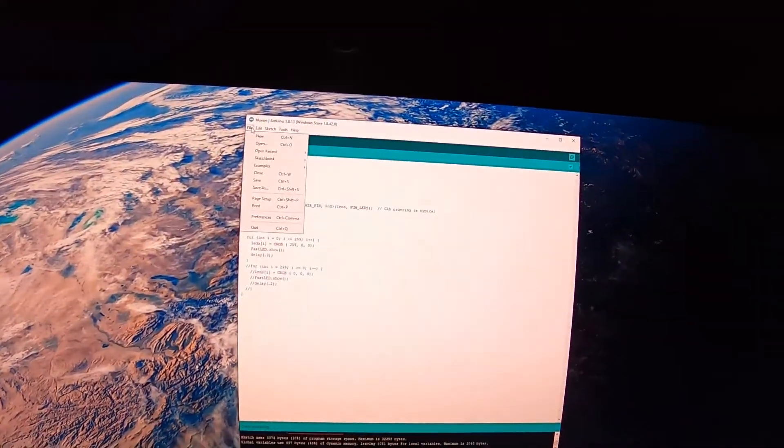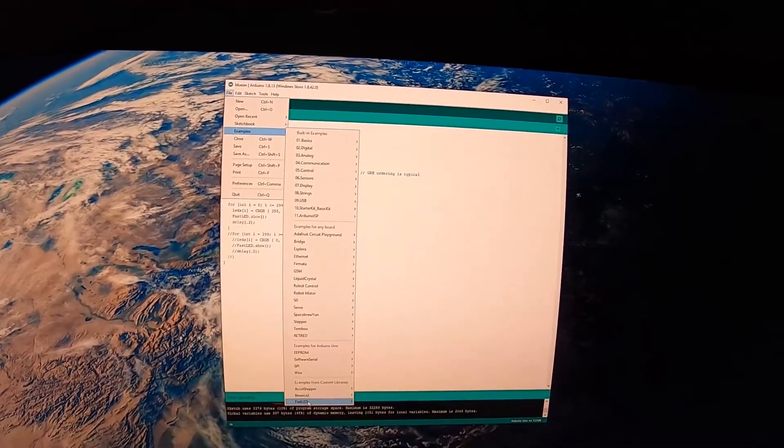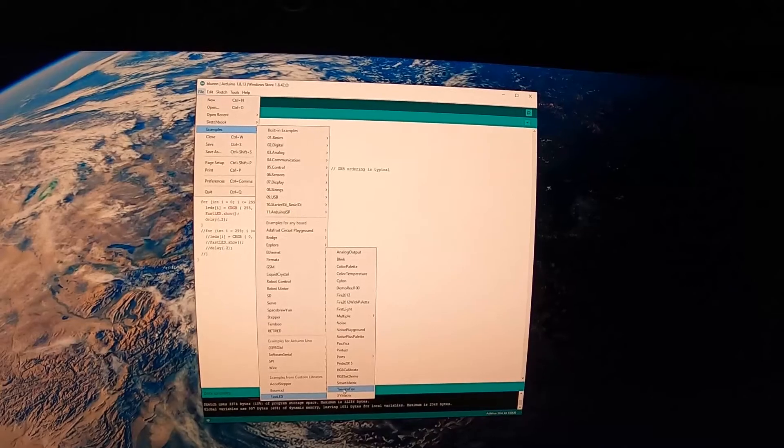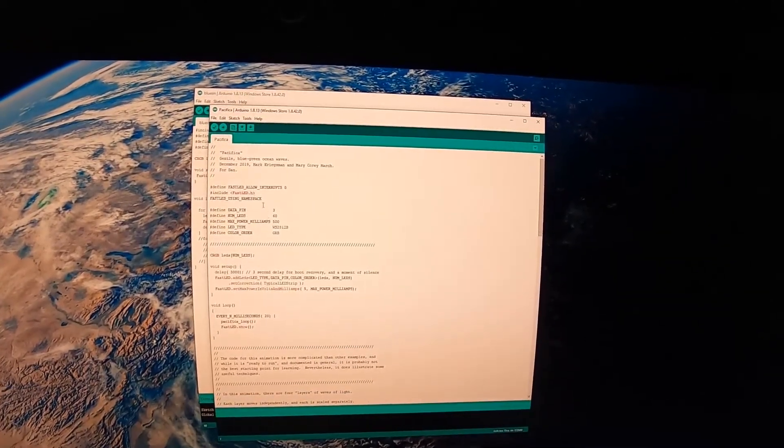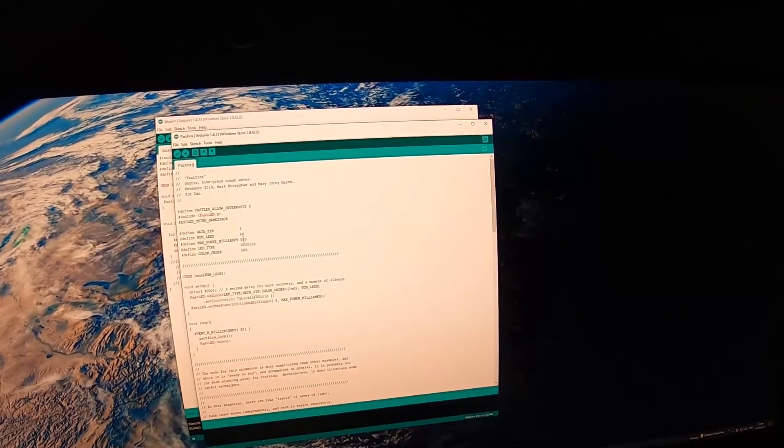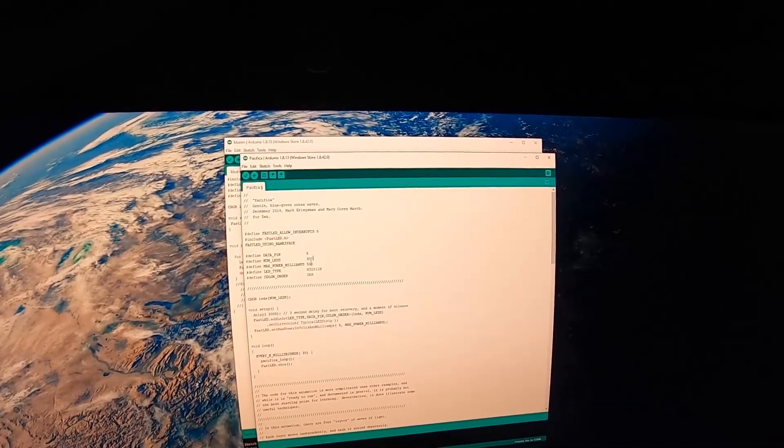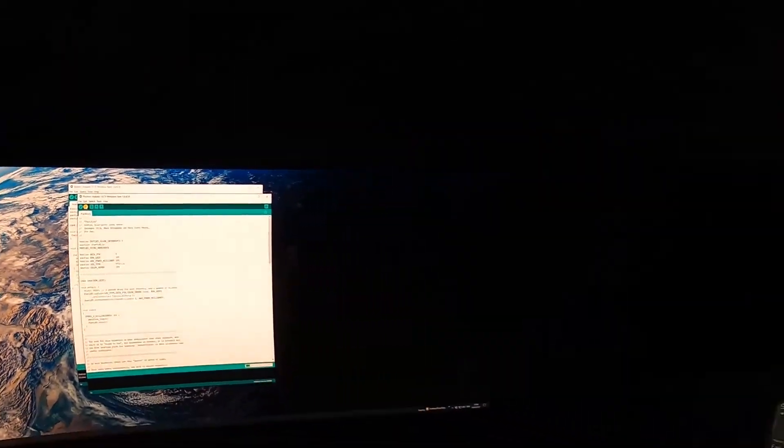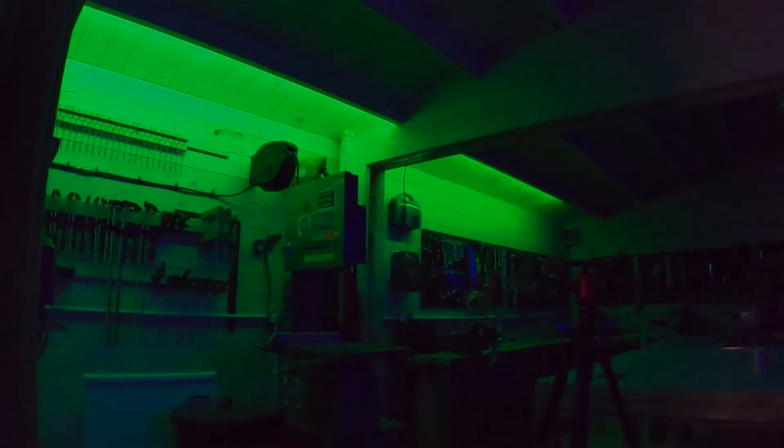Equally, if we come up here to examples and we go to fast LED and we put on, let's put Pacifica. Need to change the data pin to 5. And number of LEDs, 300. And then we send that. And then that should change to a sort of ocean feel. So blue sort of with a reflective light. Here it comes. So you can just about see it flickering.